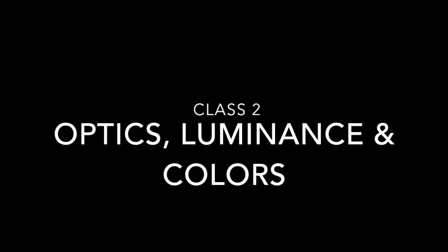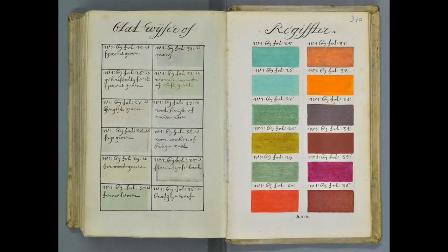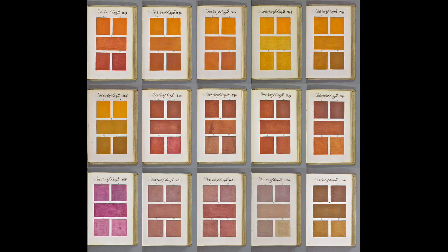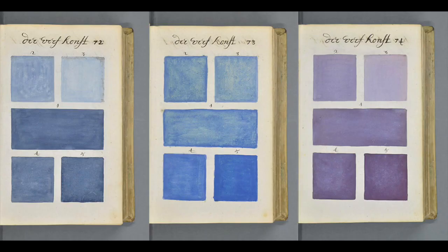Painters have been trying to figure out colors since painting first started. In 1692, a Dutch artist named A. Boogert sat down to create a book about mixing watercolors and the result is this amazing 800 page guide to mixing hues that is just a stunning work of art.